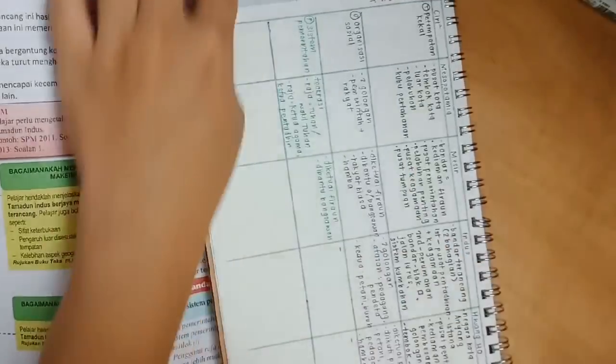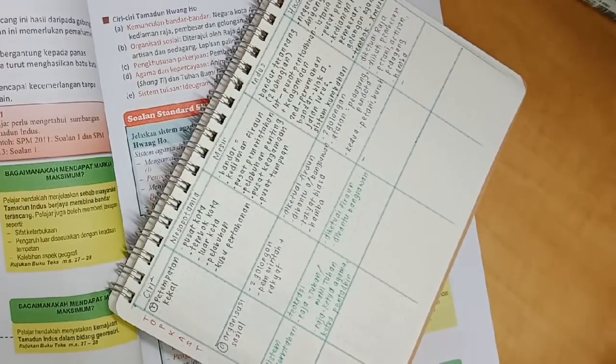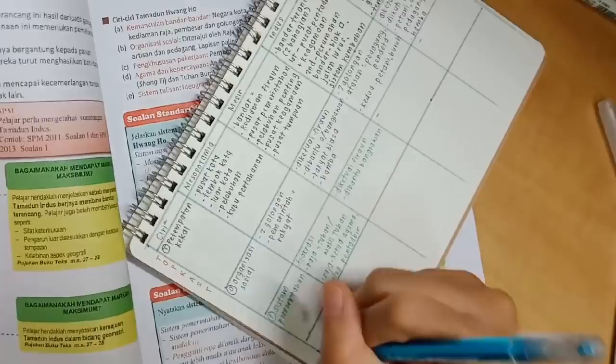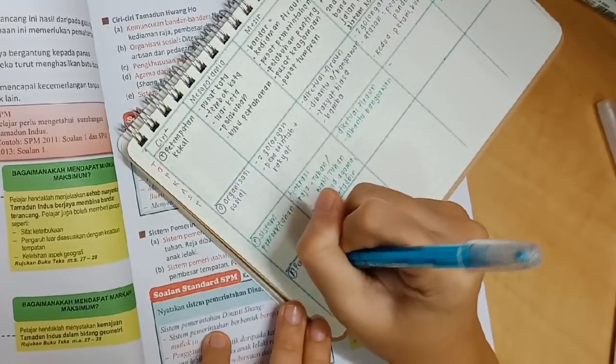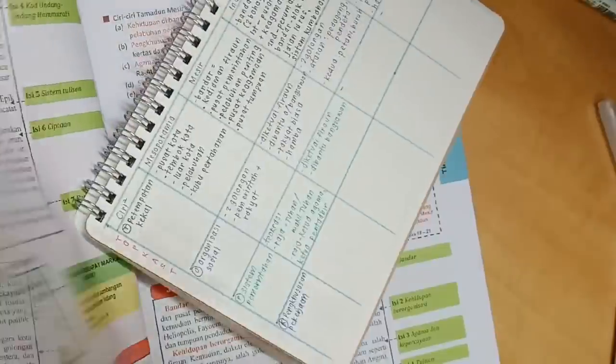Now I'm done with System Pemerintahan and I'm moving on to the next section and I made sure to use a different colour pen again. I'm using a blue colour pen this time just so it's easier to differentiate between the information.